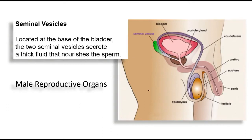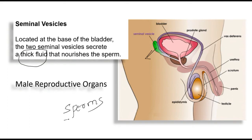Look at the green part here — these are the seminal vesicles, located at the base of the bladder. They are a part of the male reproductive system. The seminal vesicles secrete a fluid. Without this fluid, the sperms will die. The sperms require nourishment and need to swim, so this thick fluid provides that environment.